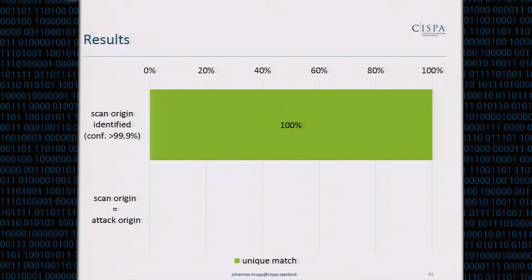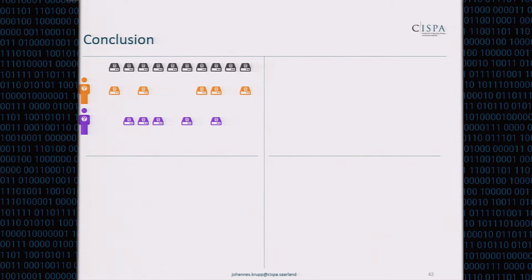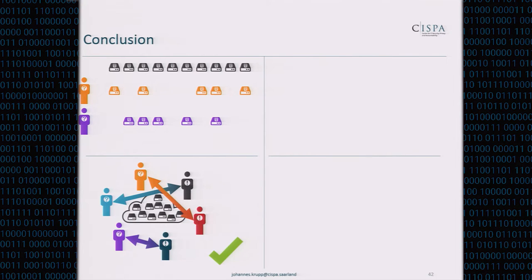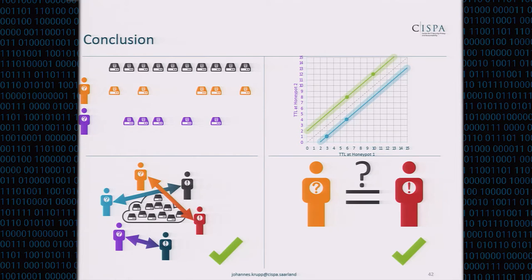Going back to all attacks linked with 99.9% or higher confidence to their scan origin, we found that for 37% of those the scan origin is very likely the same as the attack origin, with 98% or higher confidence. Meaning over a third of all attacks we could link were very likely caused by the scanner itself — and in this case, we have found the actual source of the attack. To conclude: we implemented selective response to link scanners to attackers, and using our TTL trilateration-like method we could determine whether a scanner actually is an attacker. Thank you.